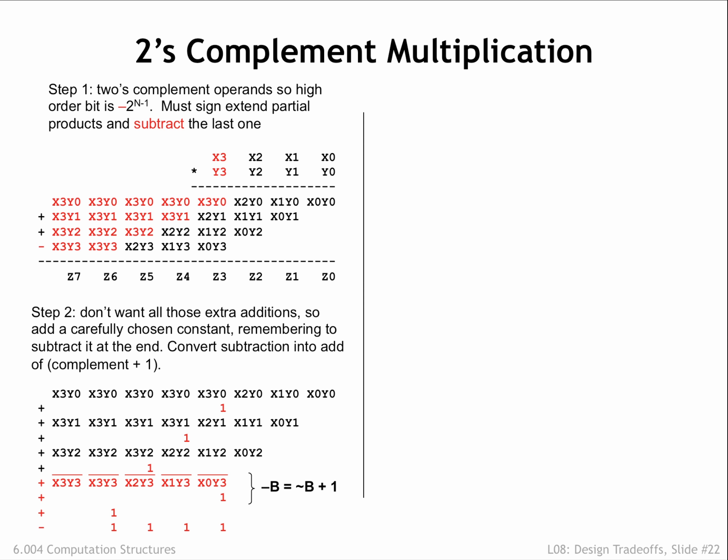Now for the clever bit. We'll add 1's to various of the columns and then subtract them later, with the goal of eliminating all the extra additions caused by the sign extension. We'll also rewrite the subtraction of the last partial product as first complementing the partial product and then adding 1.